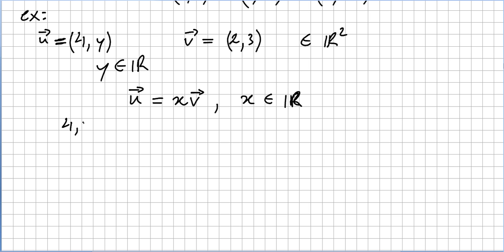So x. So what we have here is the vector (4,y). Can it be written as a linear combination of x times (2,3)? So (4,y) has to be (2x, 3x), right? So y here is a component and x here is a scalar.